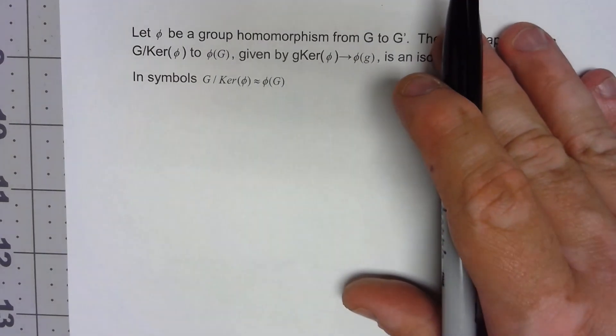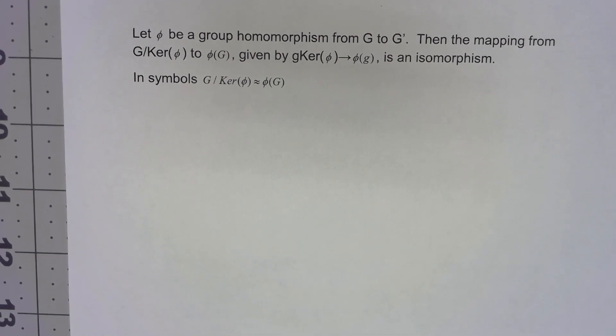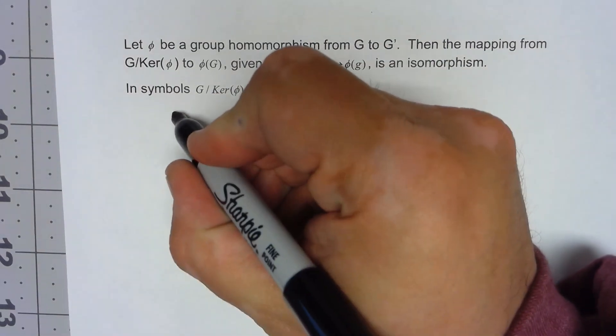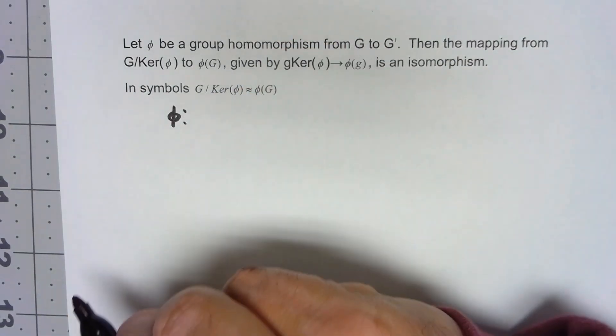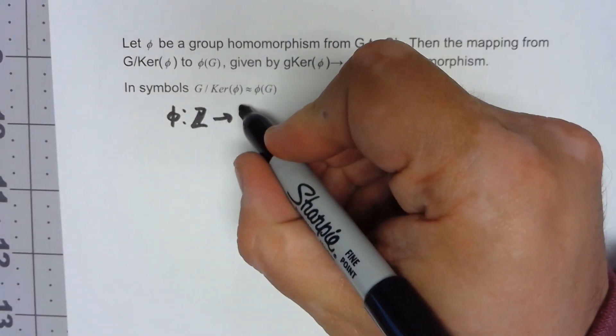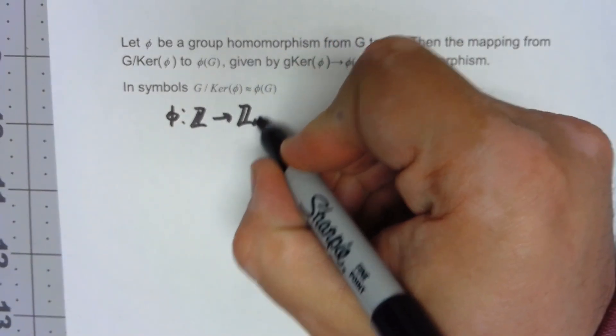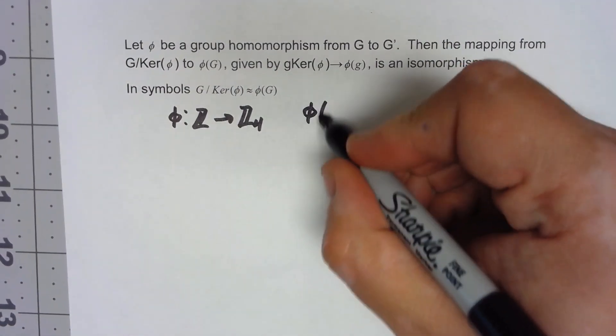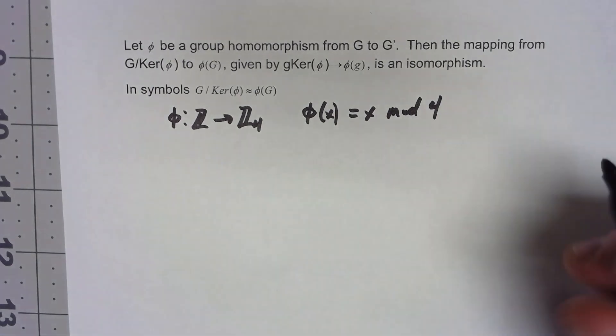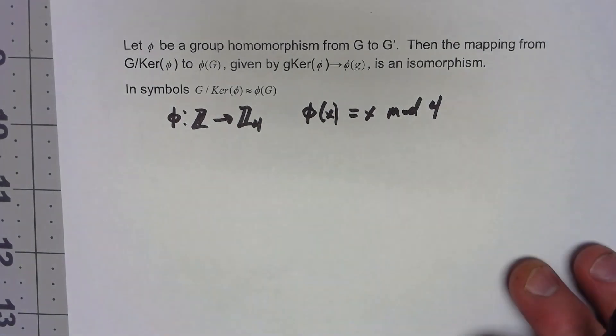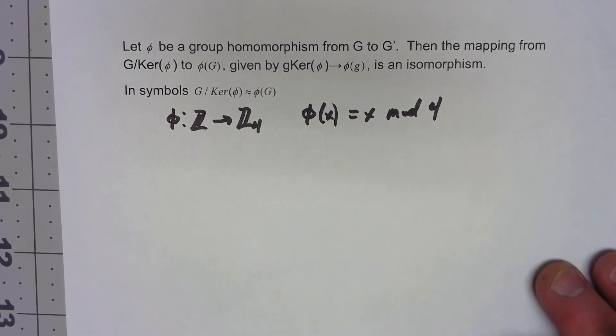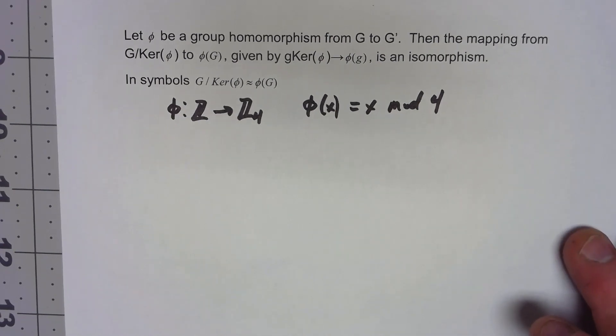Before I try and prove this, let's go ahead and look at a simple example. It's very similar to the first example in the last one. Let's say I have phi going from the integers under normal addition to Z4 defined by phi of x equals x mod 4. I'm not going to prove that that's actually a homomorphism because it's exactly the same argument that we used in the last video.